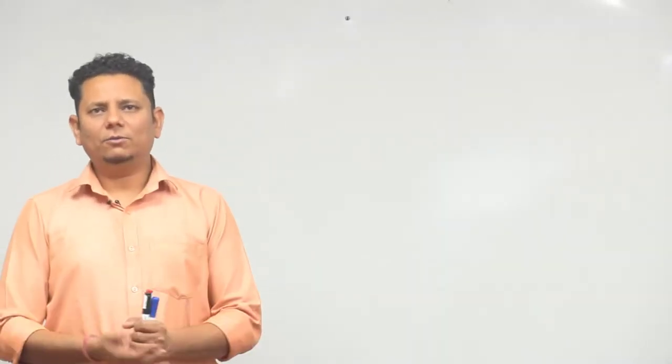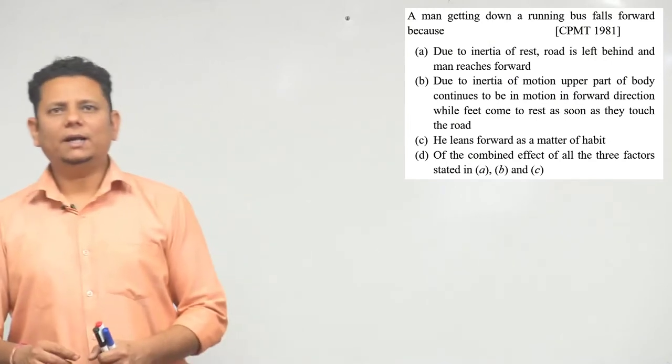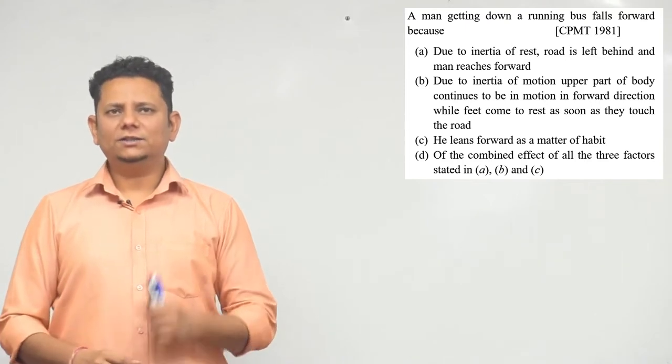Next question. A man getting down from a running bus falls forward because four options are given. Option A: due to inertia of rest, road is left behind and man reaches forward.